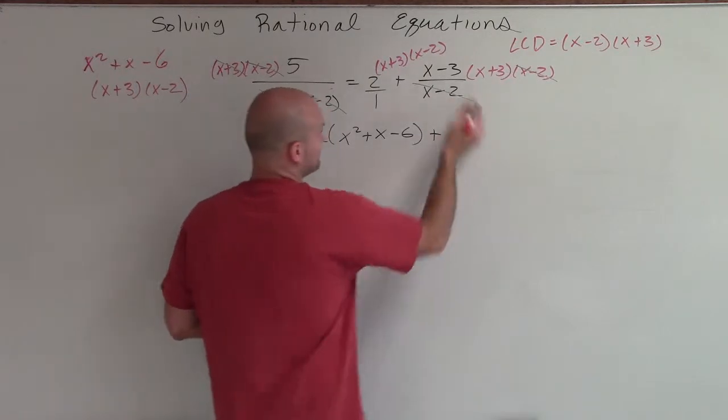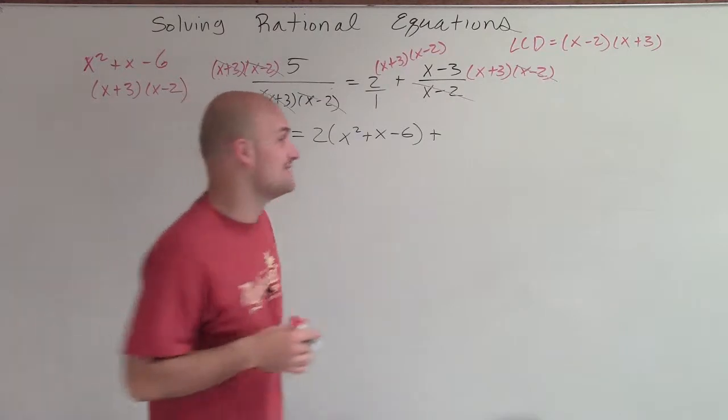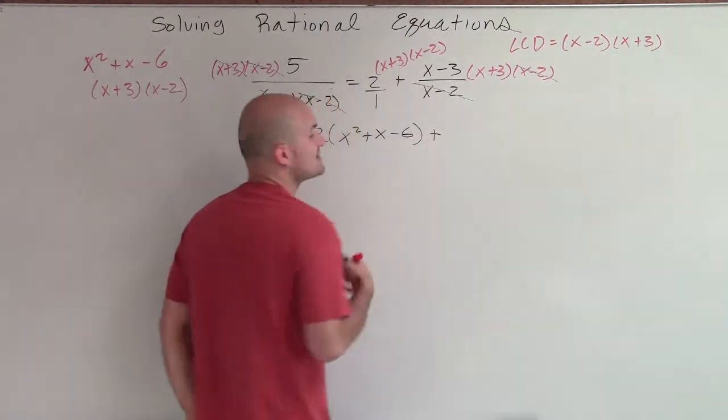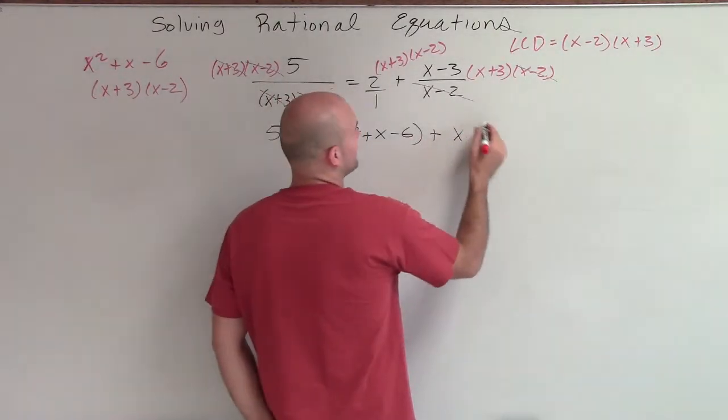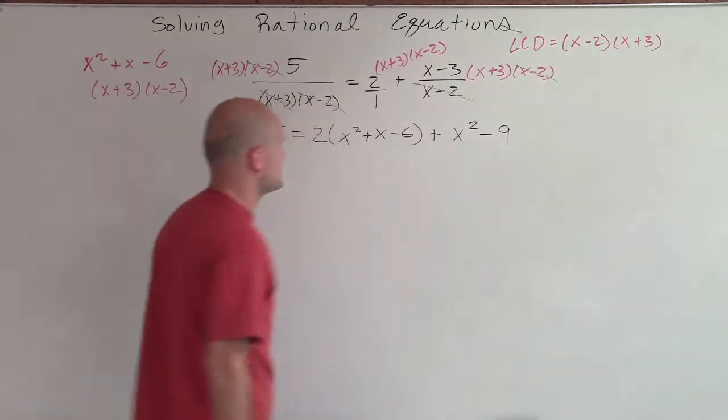And then plus, I have x minus 3 times x plus 3. Well, through factoring, we should notice that this is a difference of two squares. And since I want to simplify this, I'm going to rewrite that in my factored form. So x minus 3 times x plus 3 is going to be x squared minus 9.